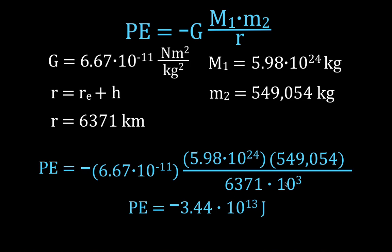We calculate the answer and we get a negative value. The potential energy of that rocket when sitting at the surface of the Earth is minus 3.44 times 10 to the 13 joules.